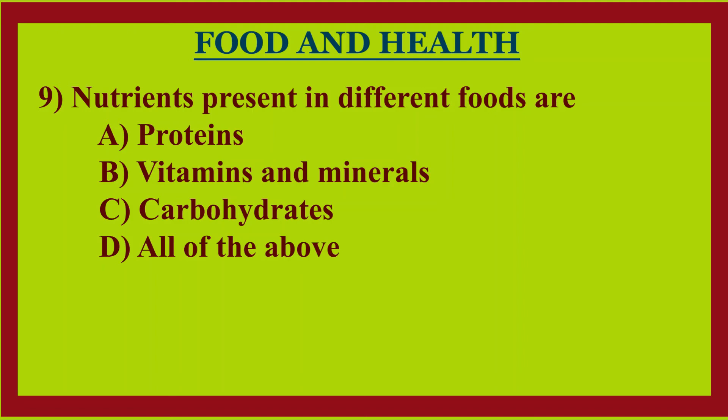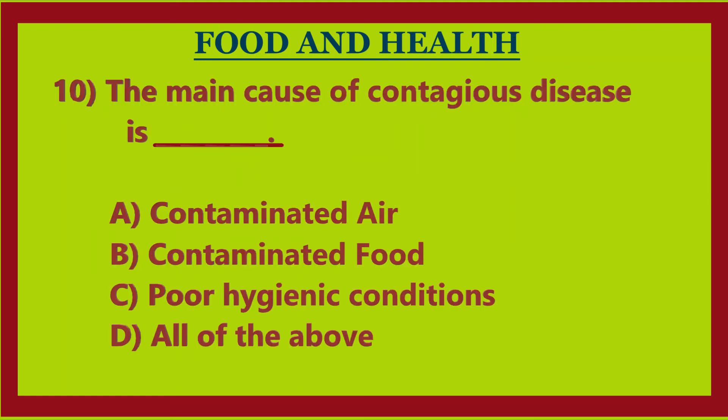Ninth question: nutrients present in different food are — option A: protein, option B: vitamins, option C: minerals, option D: all of the above. Answer: option D, all of the above.